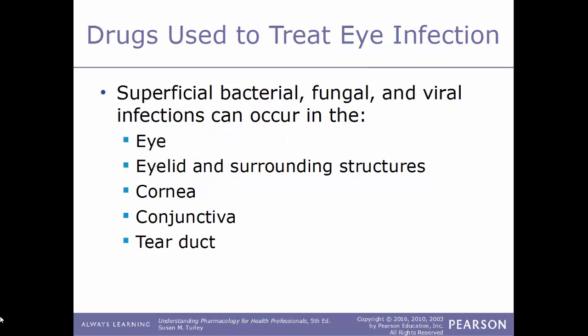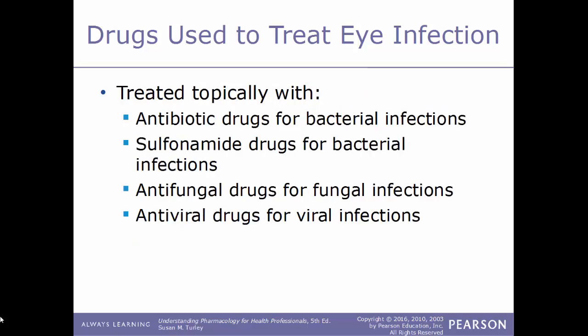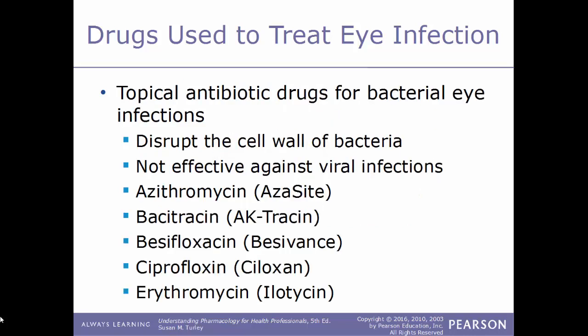First we'll start off with drugs that are used to treat eye infections. Superficial bacterial, fungal, or viral infections can occur either within the eye itself or the eyelid and surrounding structures — the cornea, the conjunctiva, and also the tear duct. These infections will be treated topically with antibiotic drugs or sulfonamide drugs for bacterial infections, antifungal drugs for fungal infections, and antiviral drugs for viral infections. Topical antibiotic drugs work because they disrupt the cell wall of the bacteria, and because these are antibiotic drugs, they are not effective against viral infections.